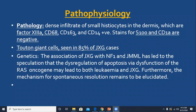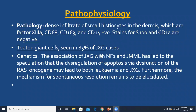The histiocytes in juvenile xanthogranuloma are Factor XIIIa and CD68 positive, while S100 and CD1a are negative. Touton giant cells are characteristically seen and are one of the diagnostic hallmarks on histology. There is a genetic association with neurofibromatosis type 1. Clinically, the disease is characterized by single to multiple papules or nodules with predilection for the face, head, and neck, with slight surface telangiectasia and firm to rubbery consistency. A giant variant has a solitary lesion more than 2 cm in size.